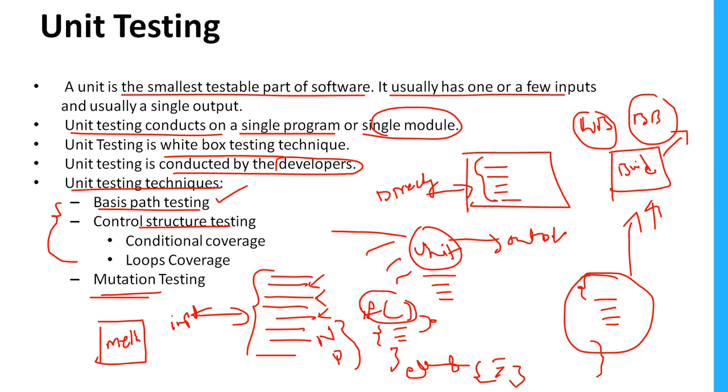This method will take certain parameters and produce some output. Here we need to provide different sets of data or different sets of inputs and verify if every time it's giving proper output or not. This is called mutation testing, also a technique used as part of unit testing. That's all for this video.